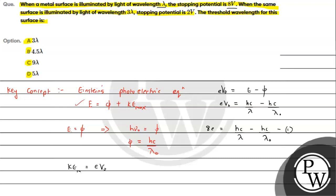The second condition: the stopping potential is 2 volt and the incident light wavelength is 3 lambda. So we can write: 2e equals hc over 3 lambda minus hc over lambda naught. This is expression number 2.